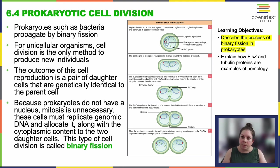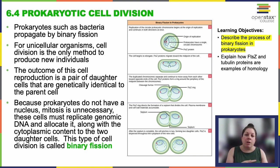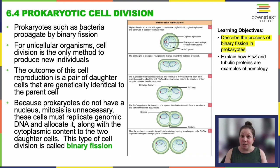Bacterial cells have that single circular DNA — that's their single chromosome. They also sometimes have little plasmids, which also have to be copied. But for the most part, they have just that one circular chromosome, which really simplifies the cell division process. It eliminates the need for mitosis and leads to something that we call binary fission.